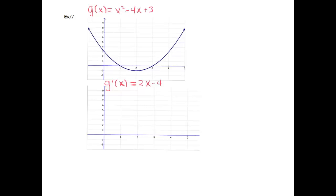So 2x - 4 is a line with a y-intercept at negative 4, and then a slope of 2, so I'm going to go up 2, right 1. There's my derivative, there's g'(x).